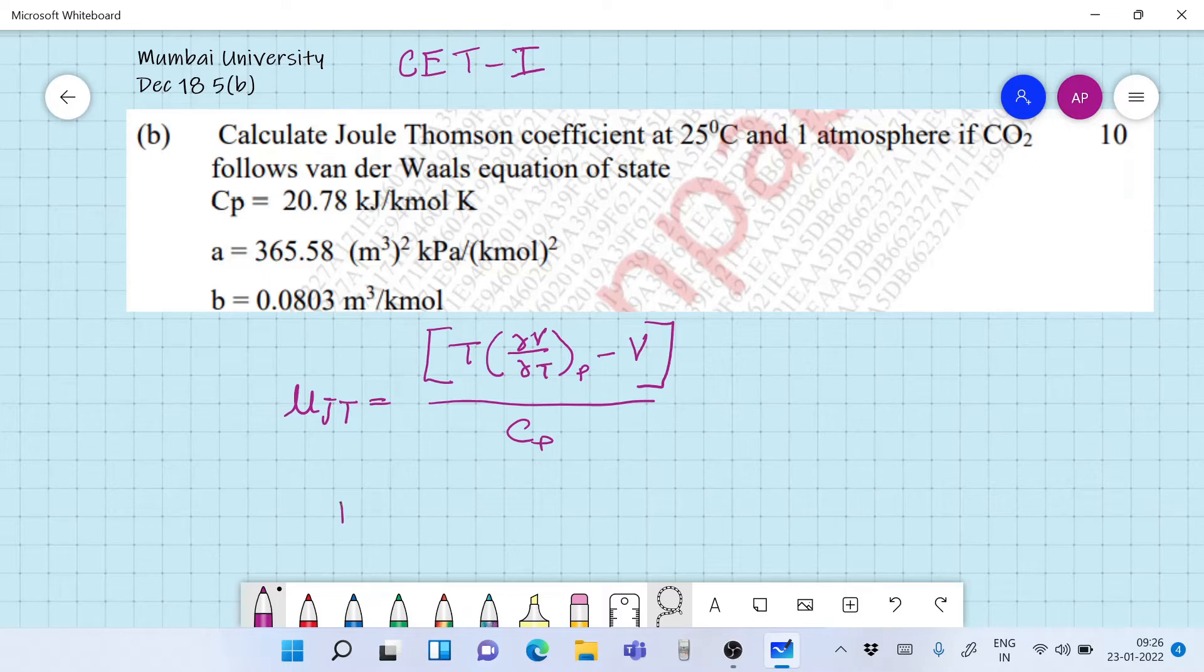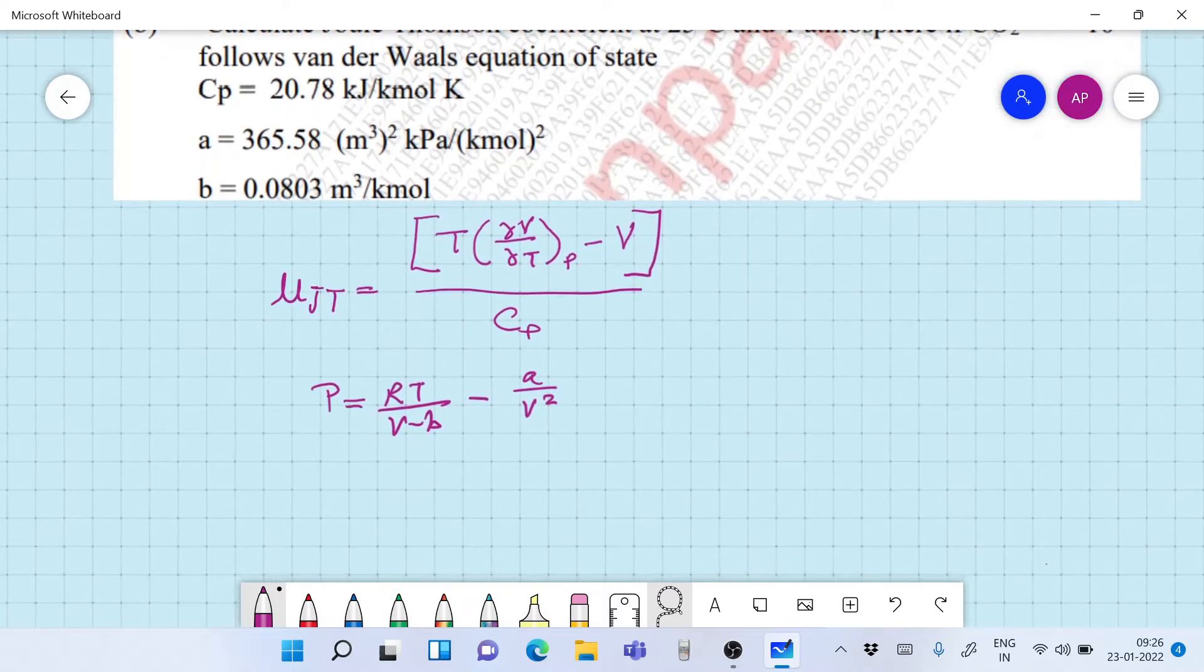So the Van der Waals equation of state is P equals RT over V minus B minus A by V square.